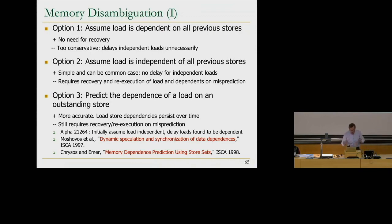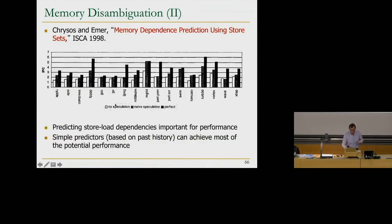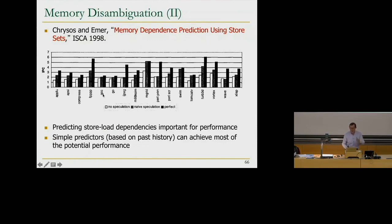Looking at performance data on the y-axis (instructions per cycle) across workloads from the 1990s — including Go, GCC, and compression benchmarks — the conservative approach is actually terrible. The aggressive approach is a little bit better, but the perfect approach shows a huge gap. That's why you'd like to handle this well. Simple predictors can actually achieve most of the potential performance.